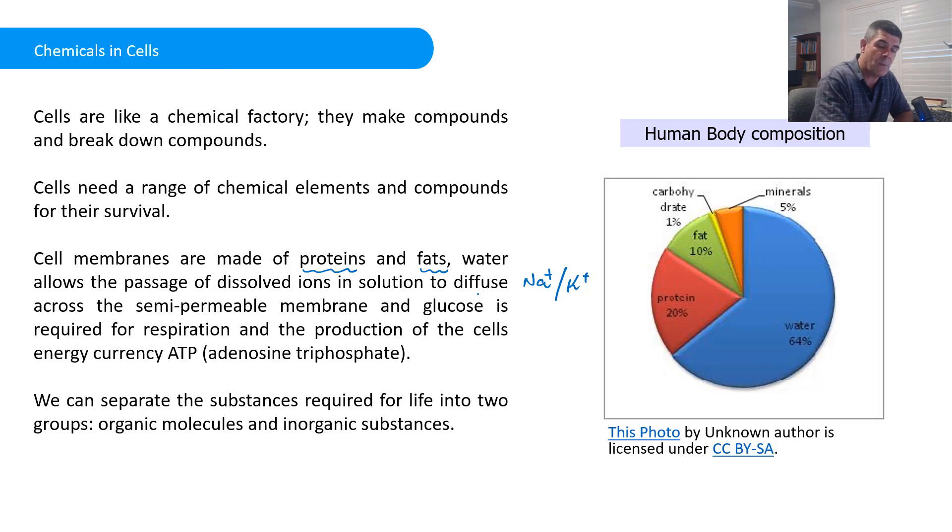And we've also talked about the importance of photosynthesis and respiration and how vital glucose is to each of those processes. And of course, the importance of glucose in producing the energy currency of the cell, which is ATP, and it is in itself quite a complex molecule.